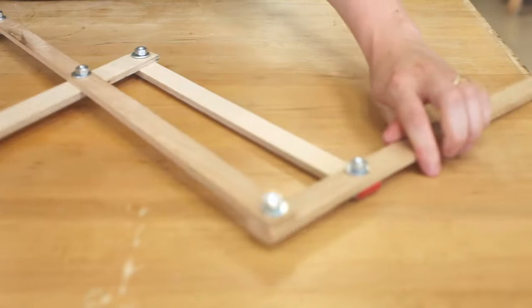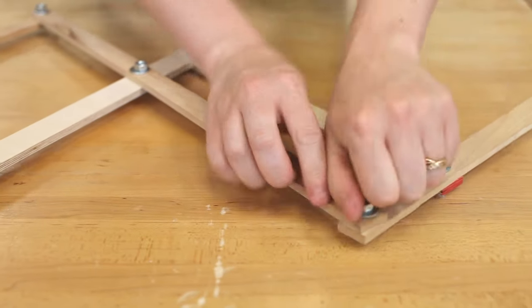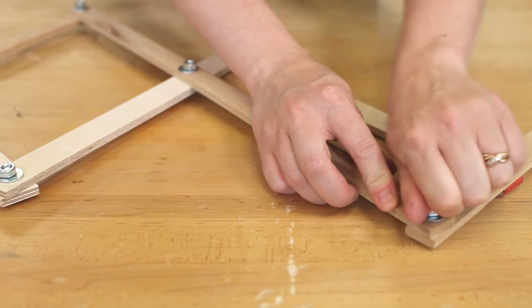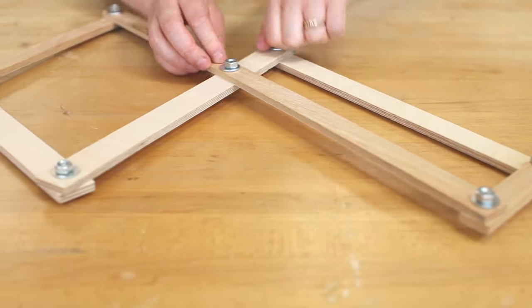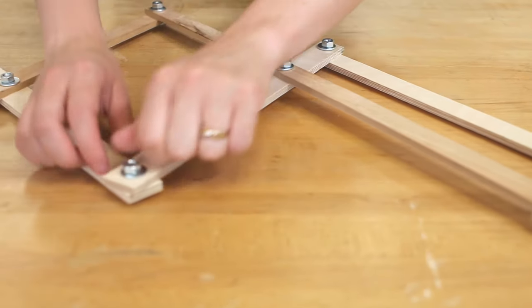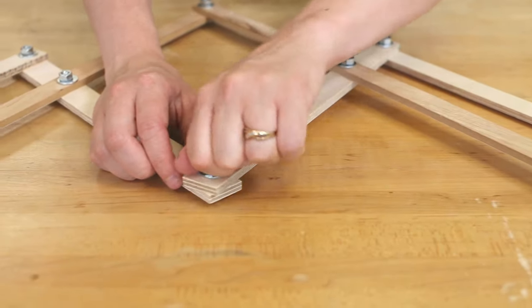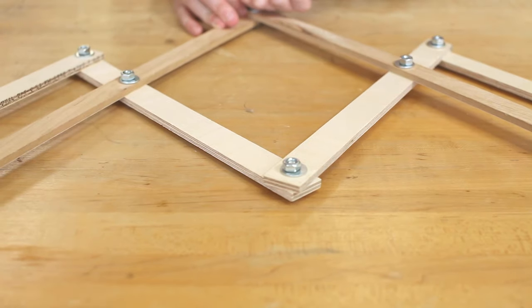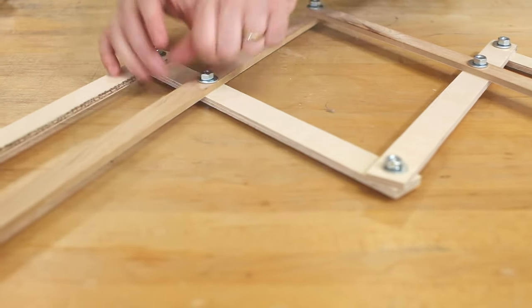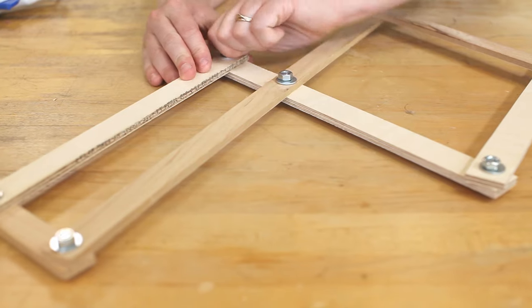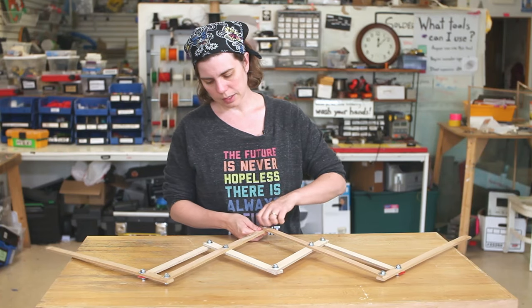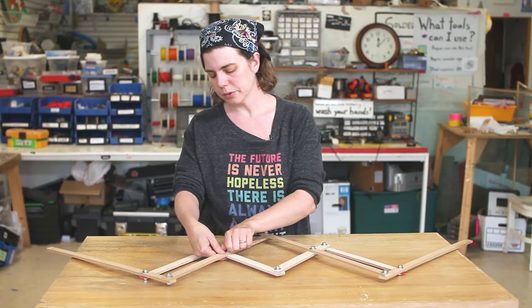As you move this, as you fold it back and forth, all of these bolts are going to want to start to come undone. We're going to flip it over backwards and tighten each of these against the washer as tightly as we can possibly get it. You might need to do this a couple of times as you use your wings because these are really going to want to come off. I'm just going to go across the whole thing and tighten up all my bolts.